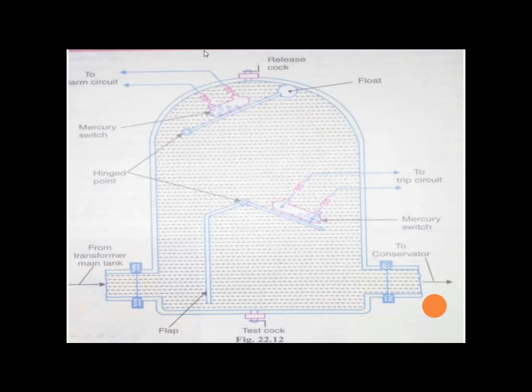In this circuit, this will show you a transformer where Buchholz Relay is set up. This is to the conservator. If there are internal faults that occur, the decomposition of the oil starts. Because gases are produced, they flow to the conservator's side. So this is the basic diagram of a Buchholz Relay.